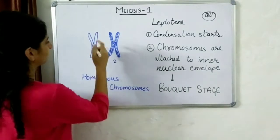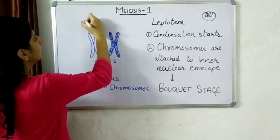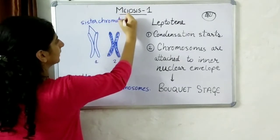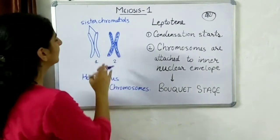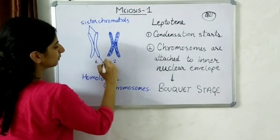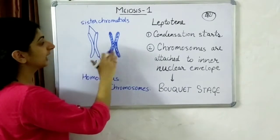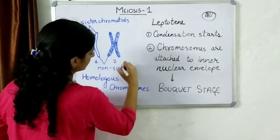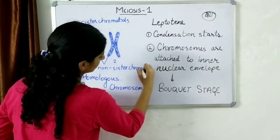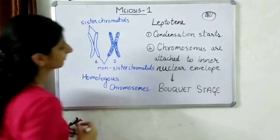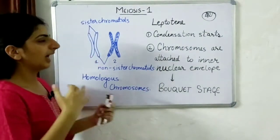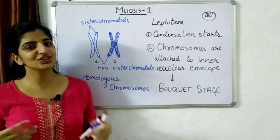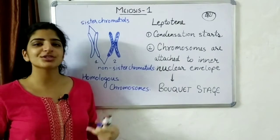These two chromatids that are present are sister chromatids — they are duplicates of each other. But these two are not duplicates; they are homologous, and therefore they are known as non-sister chromatids. As we move on, these non-sister chromatids are going to come together and finally exchange their genetic material in the process of crossing over.